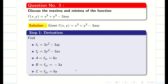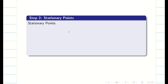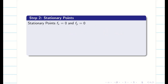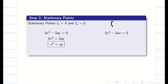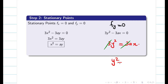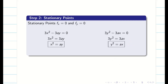Step 1 is over. Now we go to step 2: finding the stationary points by setting fx = 0 and fy = 0. From fx = 0: 3x² minus 3ay = 0, which simplifies to x² = ay. From fy = 0: 3y² minus 3ax = 0, which simplifies to y² = ax. So we get two equations: x² = ay and y² = ax.